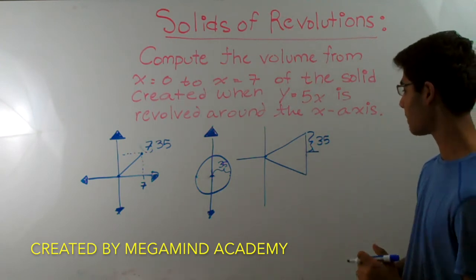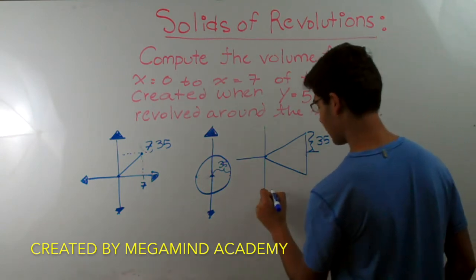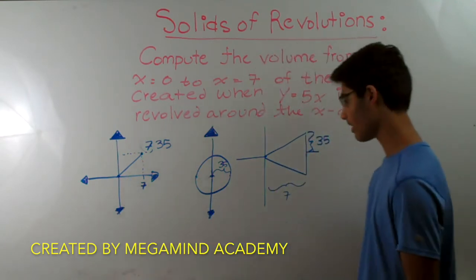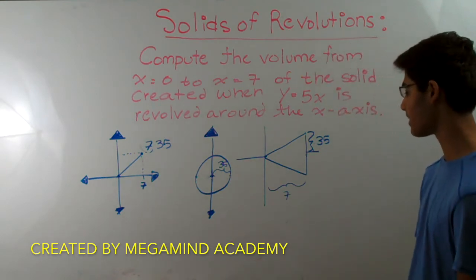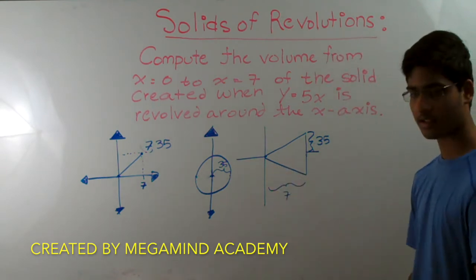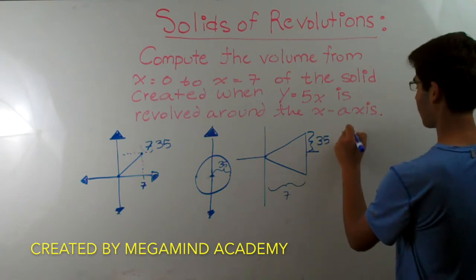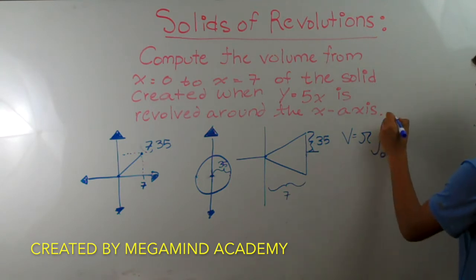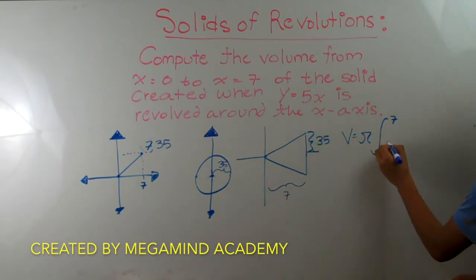So what do we do? We need to compute the volume of this cone. We know the height is 7 and the radius is 35. But what if this was a harder problem — what if it didn't start at the vertex of the cone? Here's where we use the washer method. The washer method says the volume is equal to pi times the integral from a to b — in this case 0 to 7 — of f of x squared. Here f of x equals 5x, so we have 5x squared.